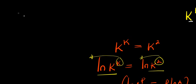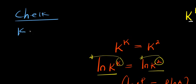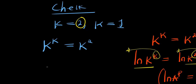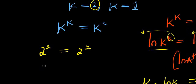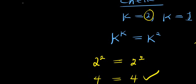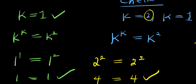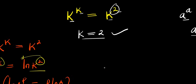We can check each value. For k equals 2: 2^2 equals 2^2, which gives 4 equals 4 — k equals 2 satisfies the equation. For k equals 1: 1^1 equals 1^2, which gives 1 equals 1 — k equals 1 also satisfies the equation. So both values of k have satisfied the equation.